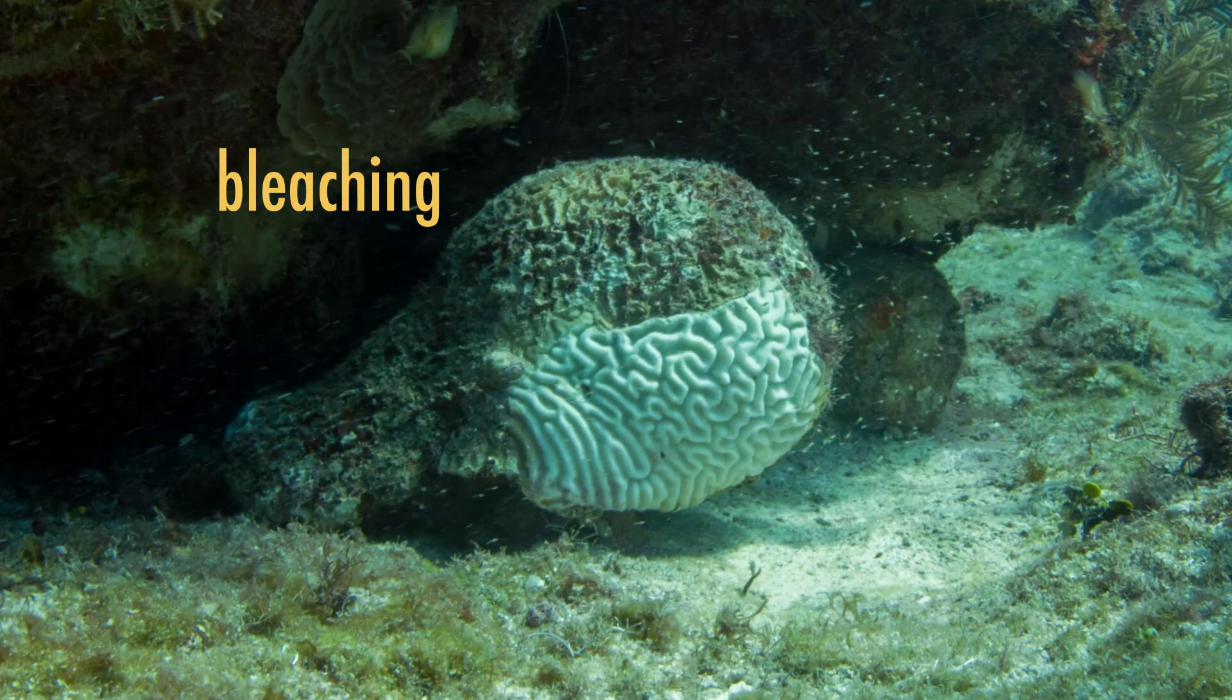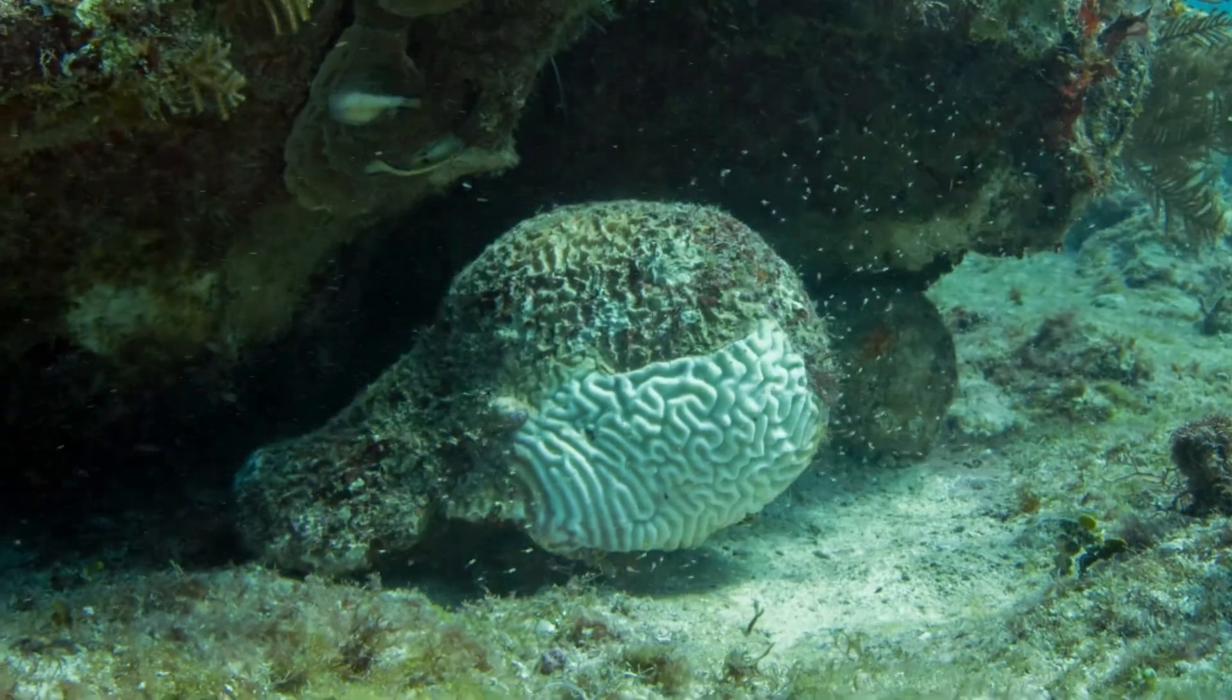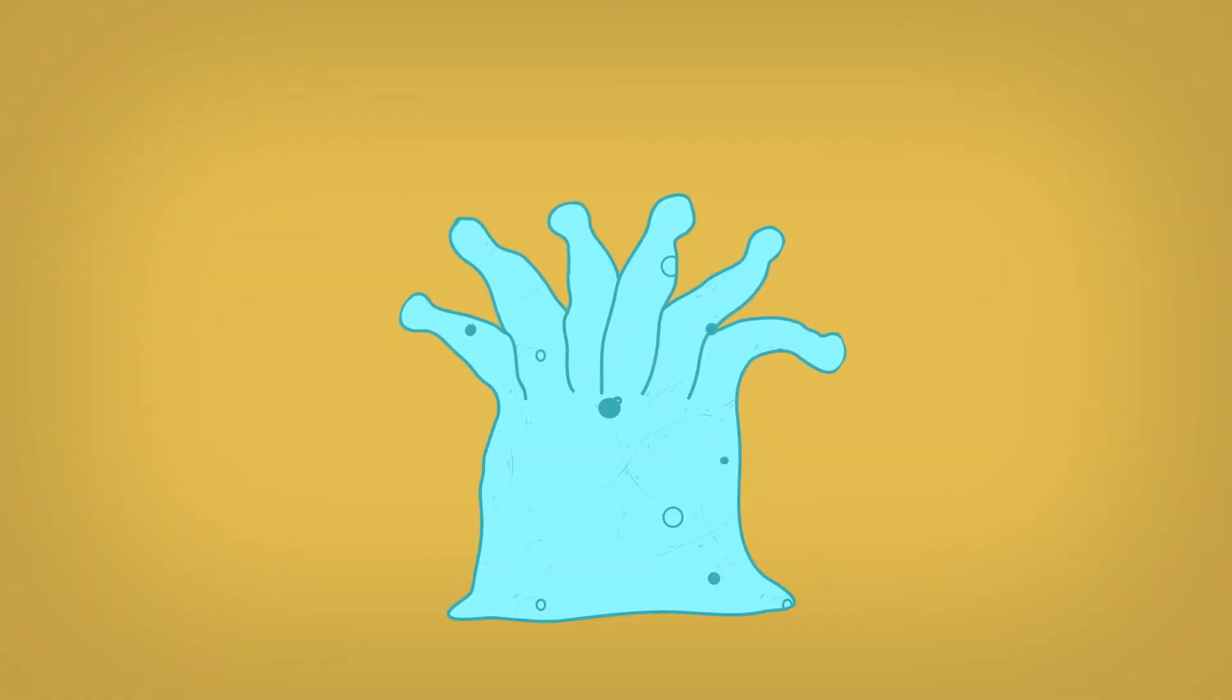Bleaching helps the coral survive short-term stress factors like unusual weather or sudden changes in their surroundings. Once things return to normal, the coral polyp can bring symbiodinium back in and get back to their usual relationship.